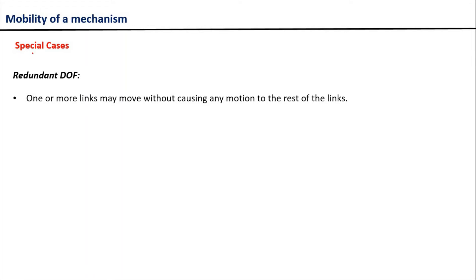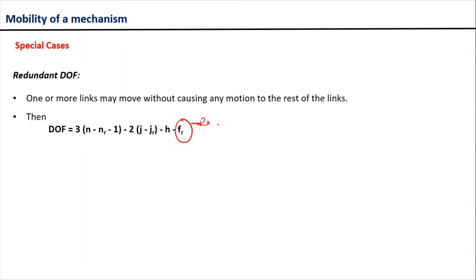Now let us talk about another special case called redundant degree of freedom. Sometimes in a mechanism it can happen that one or more links can move and at the same time their motion is not disturbing the motion of other links. Such a mechanism is said to have redundant degrees of freedom. In this case the Kutzbach criteria gets modified as: 3(N minus Nr minus 1) minus 2(J minus Jr) minus H minus Fr, where Fr is the redundant degrees of freedom in the mechanism.